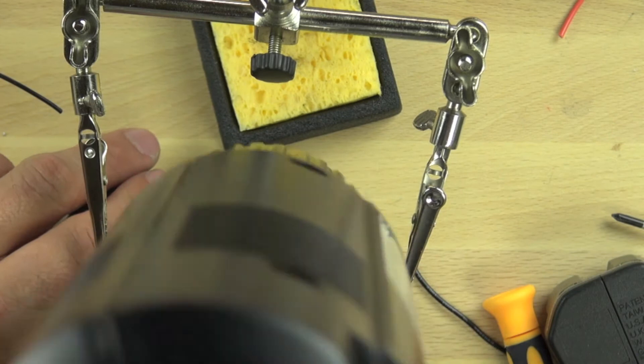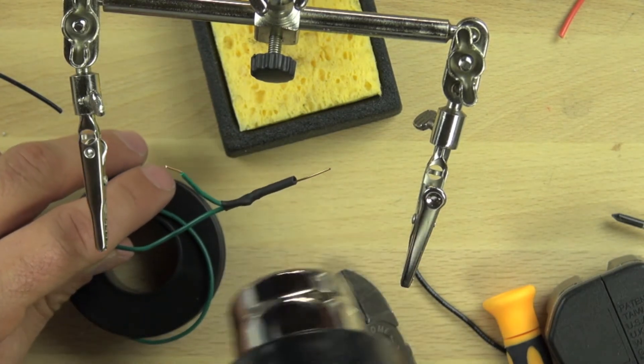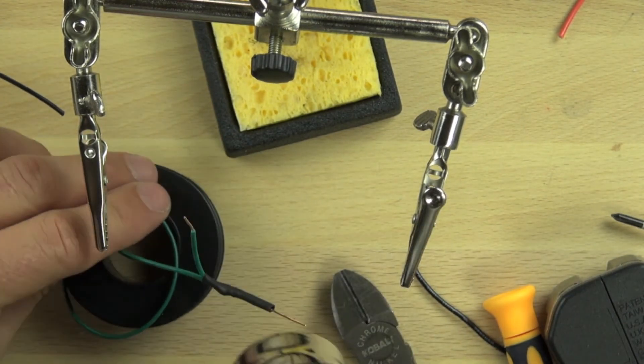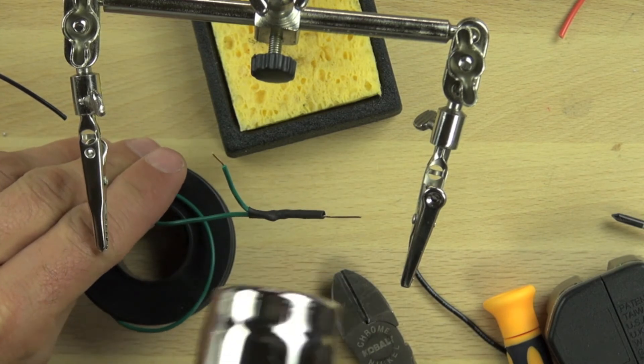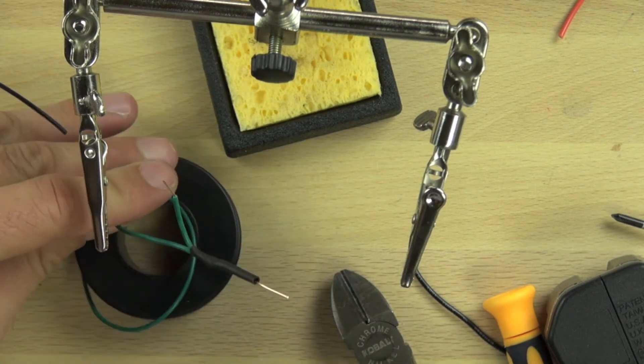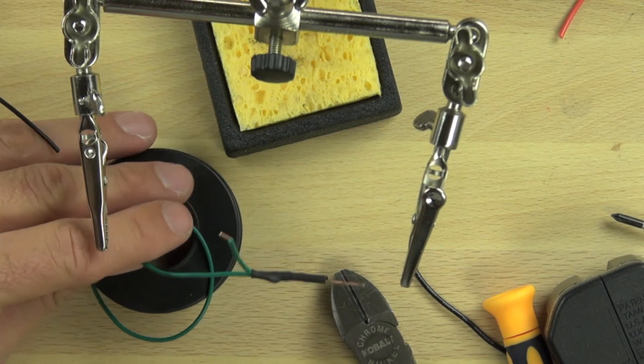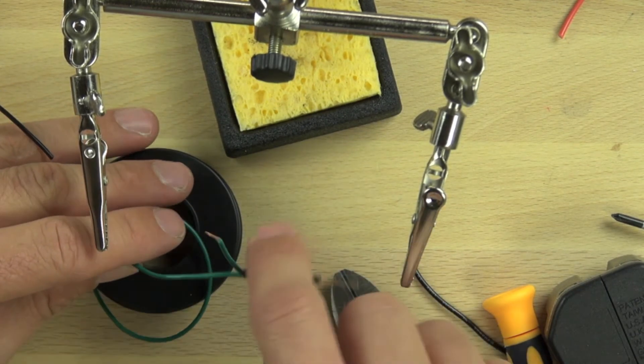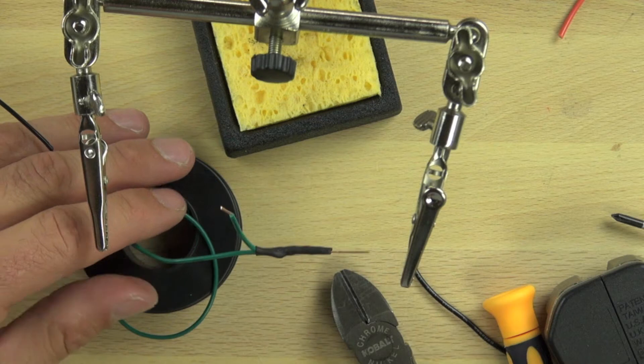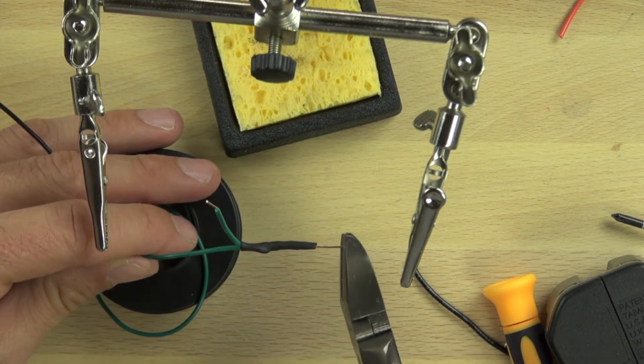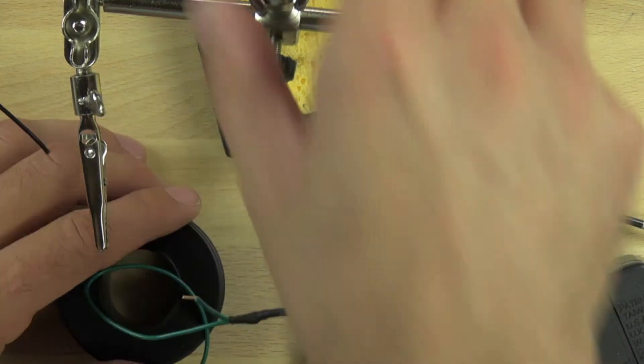Now we're just taking some heat shrink tubing that we've cut and using our heat gun to soften that tubing and shrink it around our connection. That'll prevent any shorts in the future. So if a stray wire touches that it won't short out. We're just waiting for the heat shrink tubing to dry and now we're trimming off just a little of the excess.